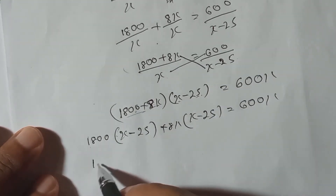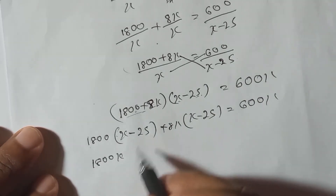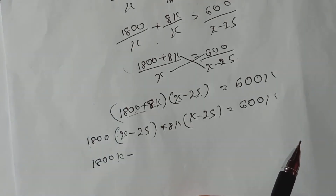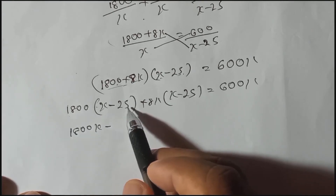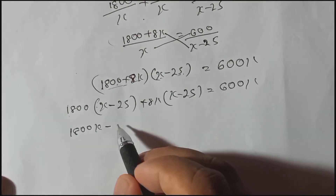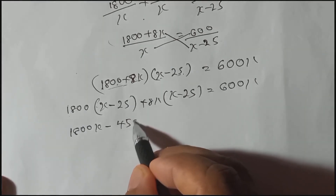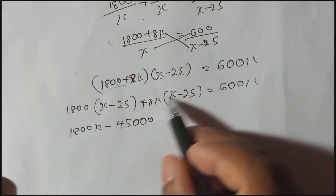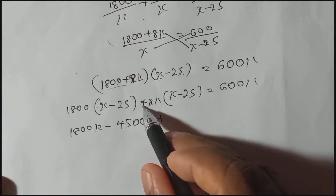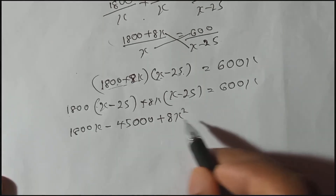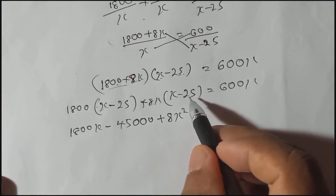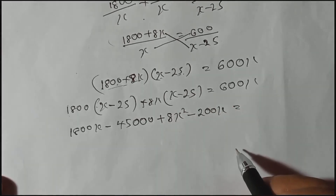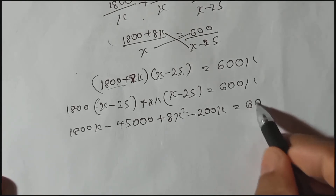1800 into x gives 1800x. 1800 into minus 25 gives minus 45,000. Then 8x into x gives 8x squared. And 8x into minus 25 gives minus 200x. The right side remains 600x.